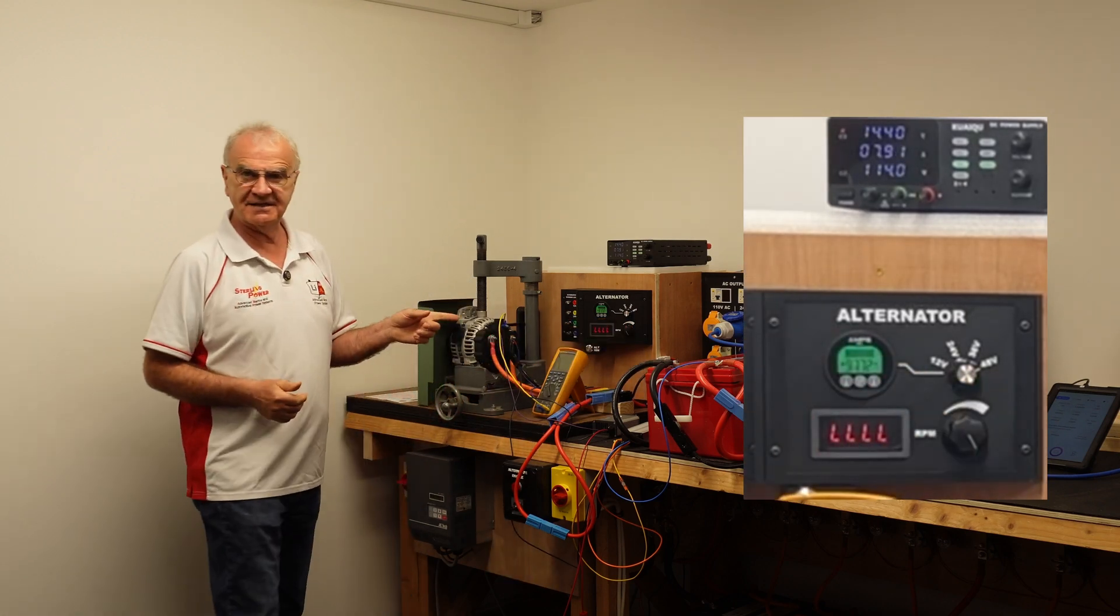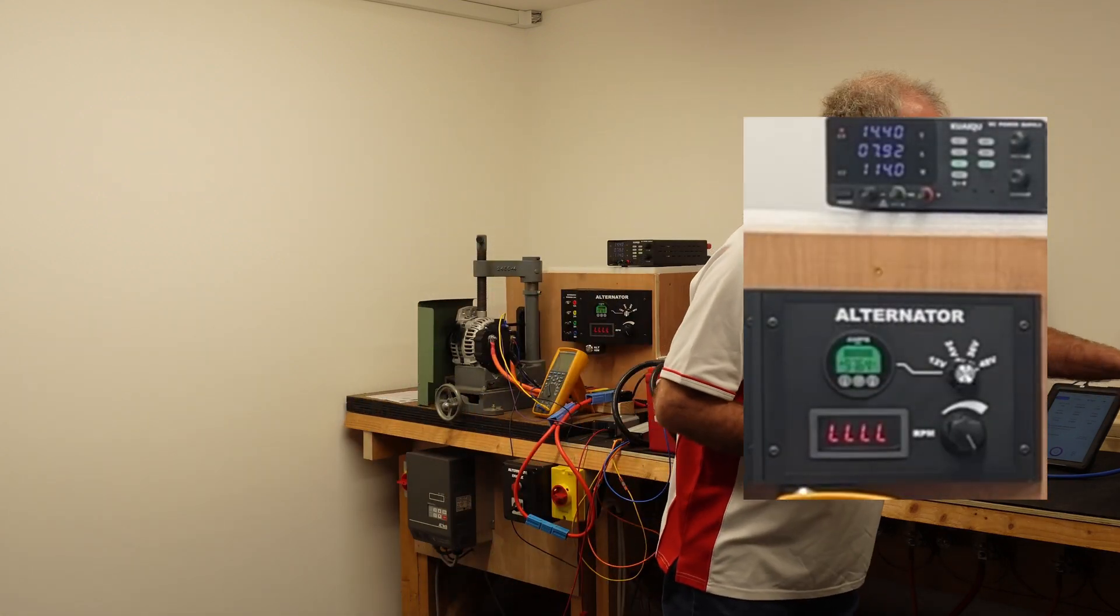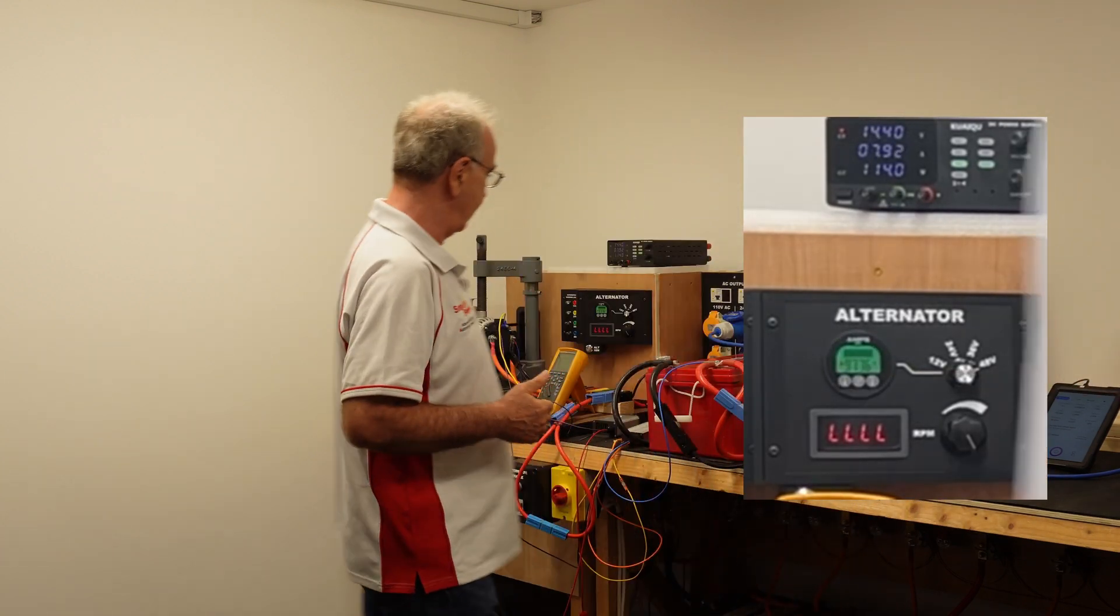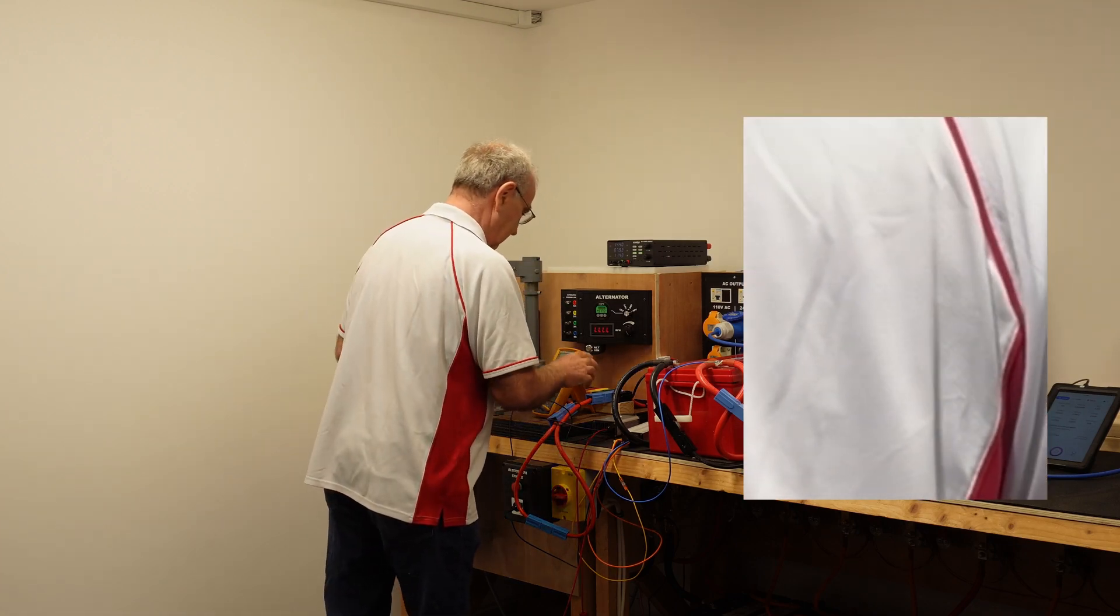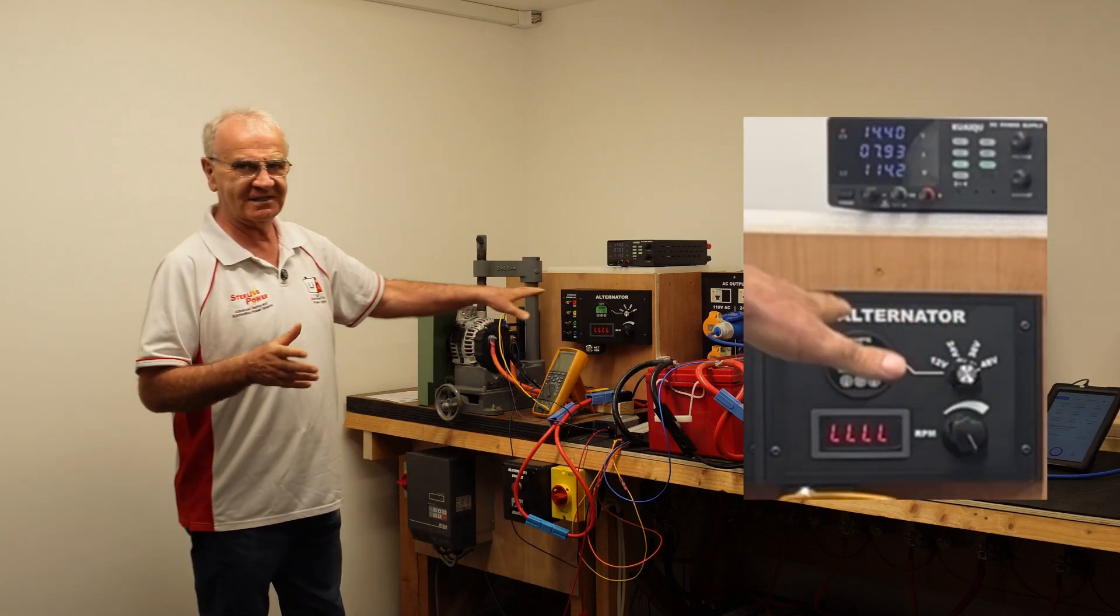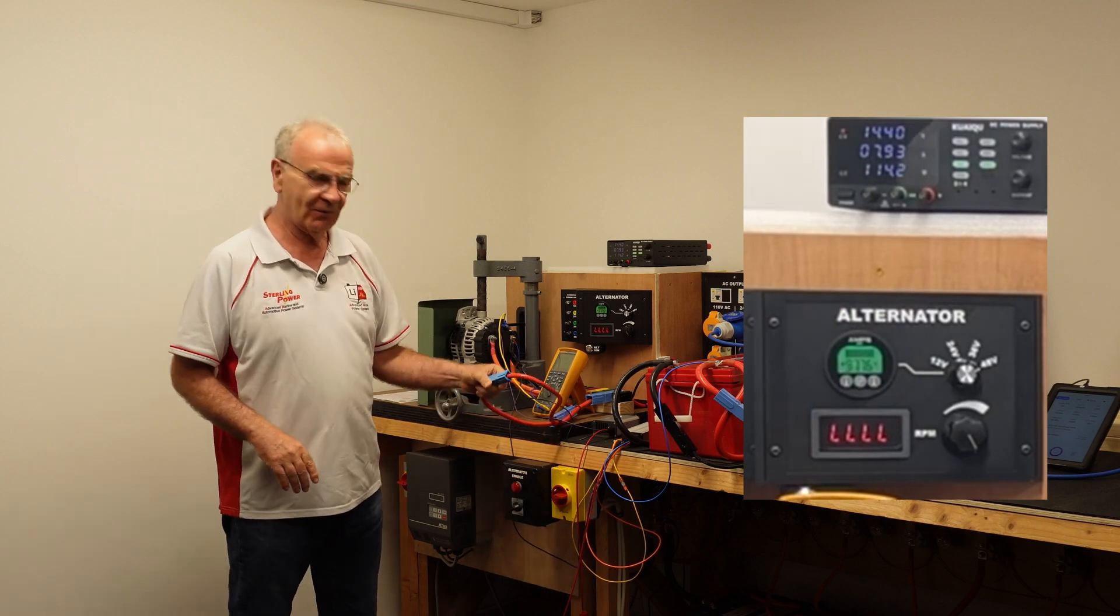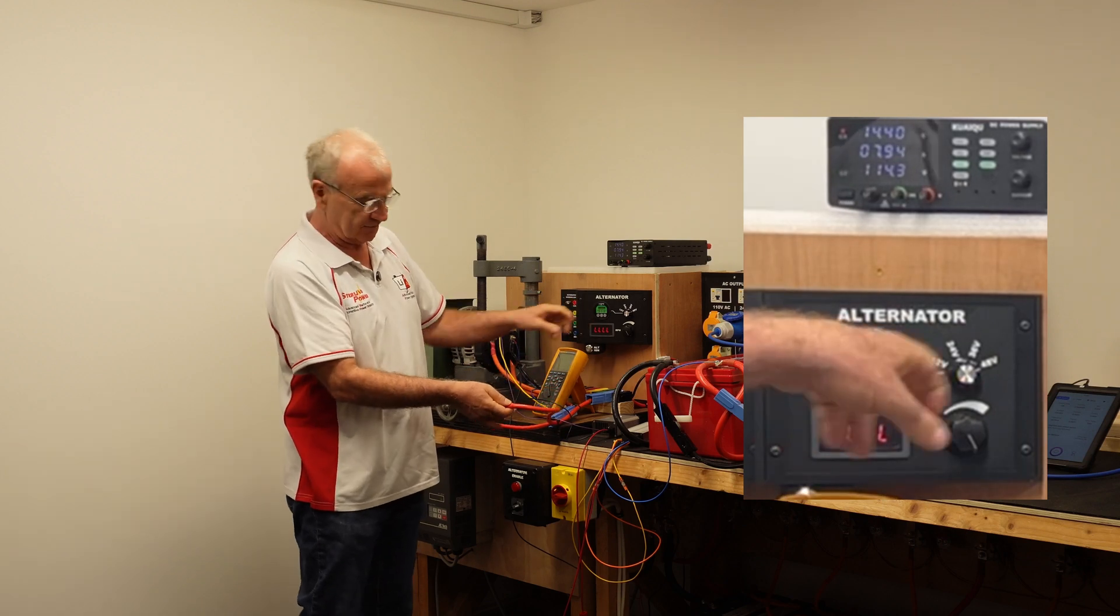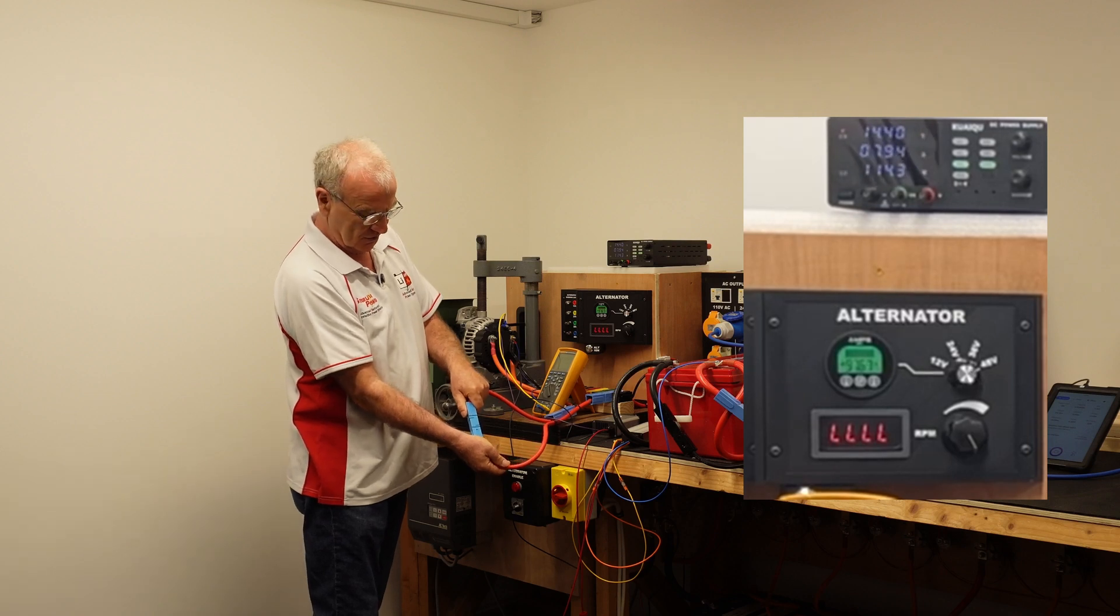Right, so we're at 97 amps there. I'll see if there's any more juice in it, I'll just put a load on here. Put a 2 kilowatt load on there, 97. I'll just leave it at 97 rather than mess around. This is the wire from the alternator to the batteries. We're doing 97 amps. I'm just going to break this wire. Don't do this at home.